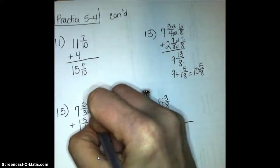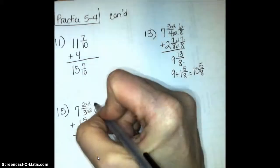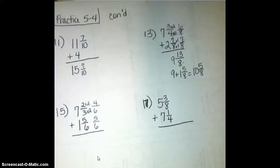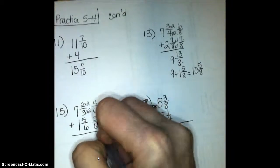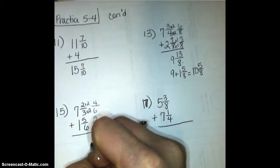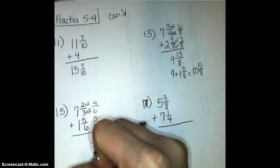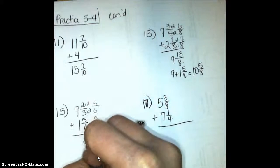And so 2 thirds, when it's my second equivalent fraction, is going to be 4 sixths. So when I add these together, 4 sixths plus 5 sixths is 9 sixths, and 7 plus 1 is 8.